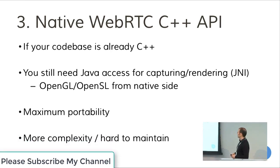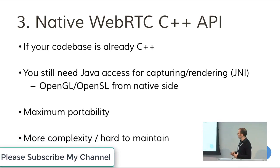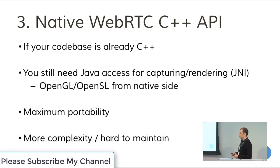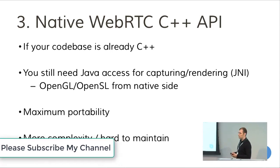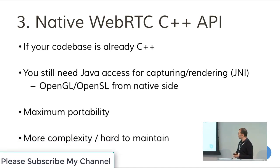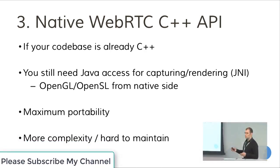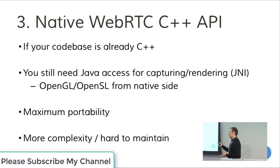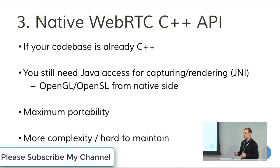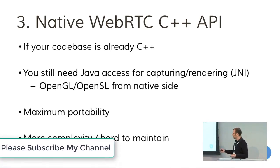The last option is the C++ API. WebRTC is written in C++, so you can access all the APIs in C++. That makes sense if your code base is already in C++, and for portability it's a good option. You still need Java access for capturing and rendering, since most Android APIs are in Java — you need JNI to access the camera, and it depends on the version, so it gets complicated. The good thing is you have maximum portability: the same C++ code can run on iOS, Android, desktop, and other platforms. But it's very complex to maintain. The C++ API is not as stable as the others — they keep changing the API, so if you upgrade to a new version of WebRTC you may have to modify your code.